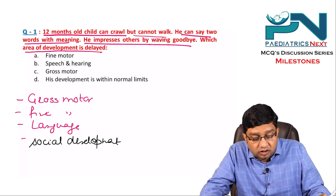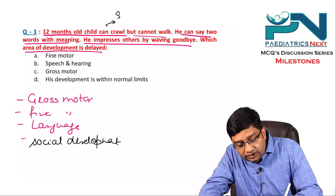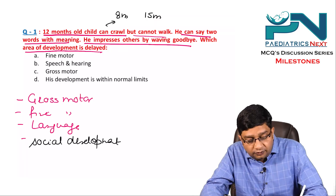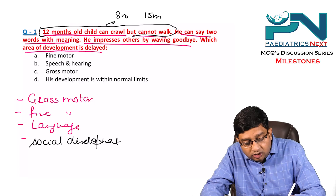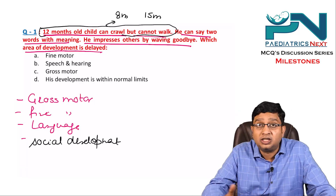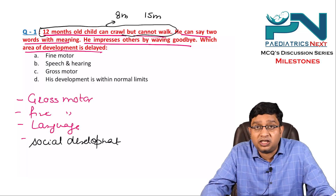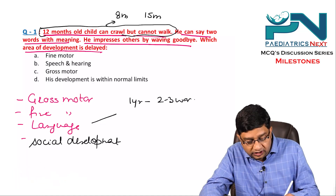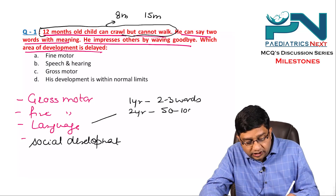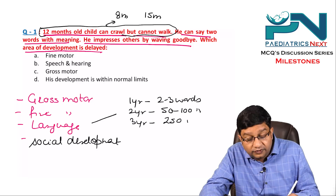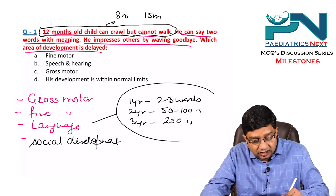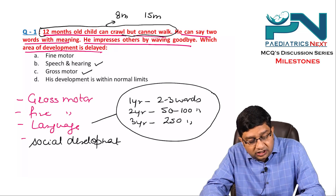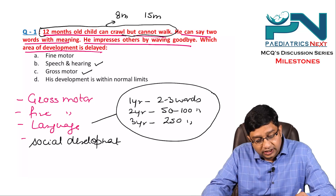At 12 months, the child can crawl — crawling comes at 8 months — and cannot walk, which is fine since walking comes at 15 months. So gross motor is well within limits. He can say two words with meaning: at one year a child speaks two to three words, at two years 50-100 words, and at three years 250 words. So speech and hearing are also okay.